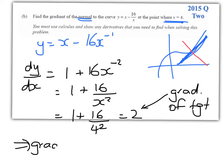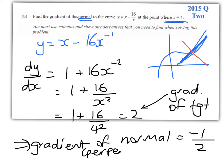This is gradient of the tangent. So gradient of normal equals negative 1/2. It is perpendicular to the tangent. So negative 1/2 and that was a nice easy achieved question.